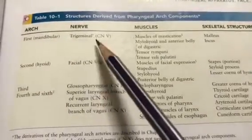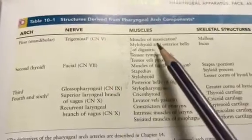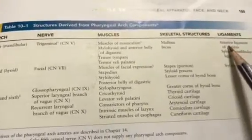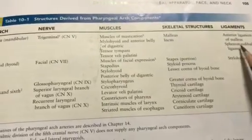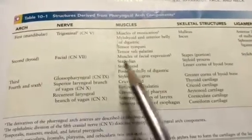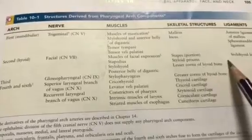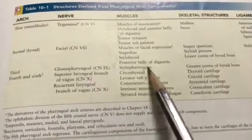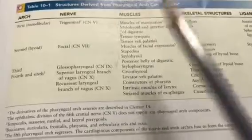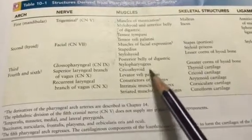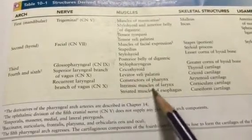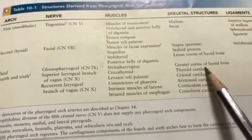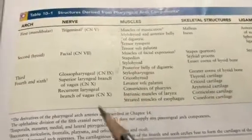To summarize in a tabular column: mandibular arch, hyoid arch, third arch, fourth and sixth arch. Trigeminal nerve with muscles of mastication and skeletal structures — malleus, incus, and ligaments — anterior ligament of malleus and sphenomandibular ligament. The second arch derivatives we covered, and for the third and fourth arches we enumerated the muscles, recurrent laryngeal nerve, laryngeal muscles, pharyngeal muscles, and all the cartilages of the larynx.